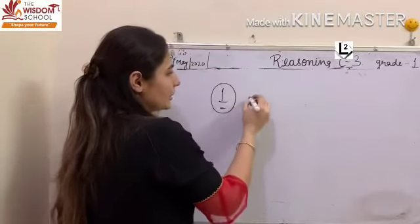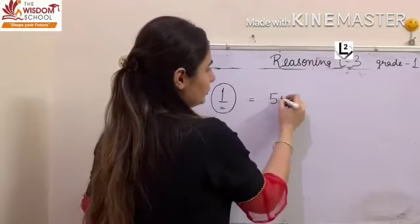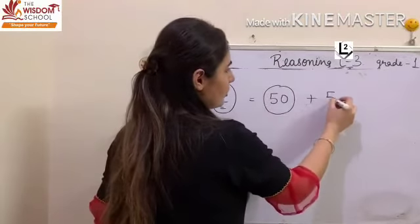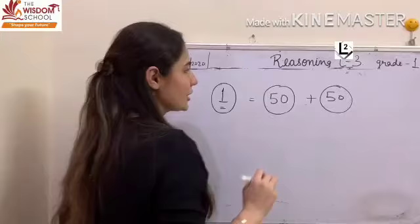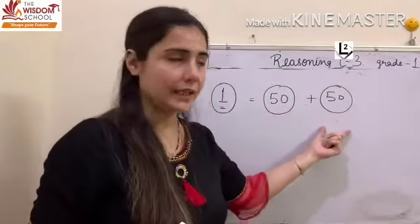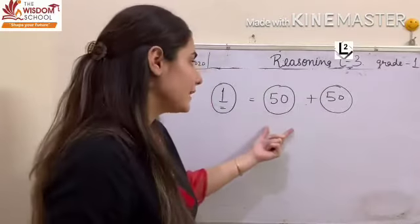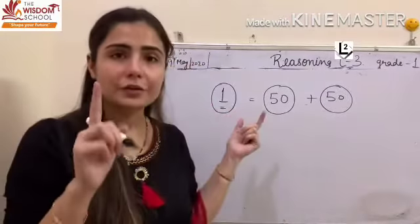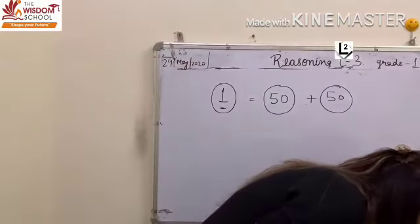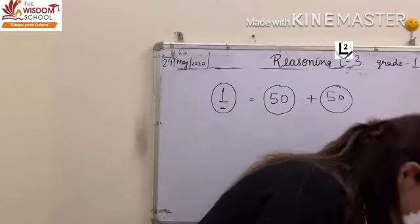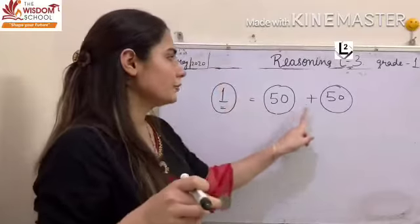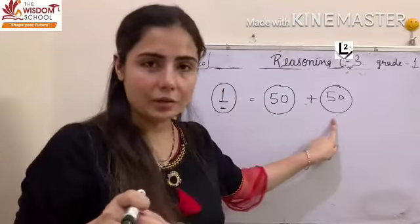And children, 1 rupee is equal to 2 fifty-paisa coins. When we take 2 fifty-paisa coins, we will get a 1 rupee coin. This means children that this 1 rupee coin is equal to 2 fifty-paisa coins.